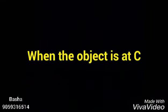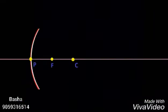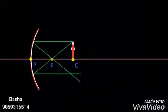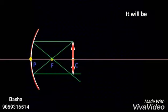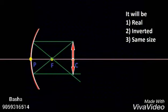Case 4: When the object is at C, two rays are selected — one parallel to the principal axis and another passing through the focus. The intersecting point is the position of the image. The image will be real, inverted, and the same size as that of the object.